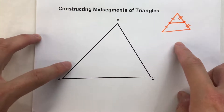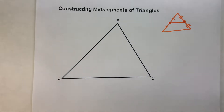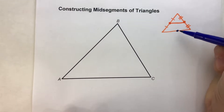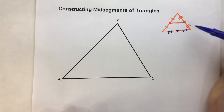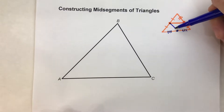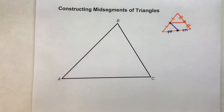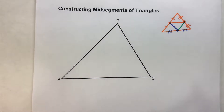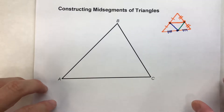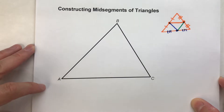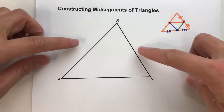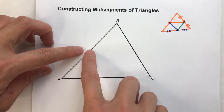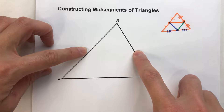Notice, there are three different possible mid-segments of a triangle, because we also have a mid-point over here too. So here's another mid-segment right there, and if you connect these two mid-points, here's another mid-segment right there. So there are three different mid-segments possible in a triangle. It's important that when you're constructing your mid-segment, make sure you're constructing the one that they're asking for. In this case, we're going to construct the mid-segment from this mid-point to this mid-point.